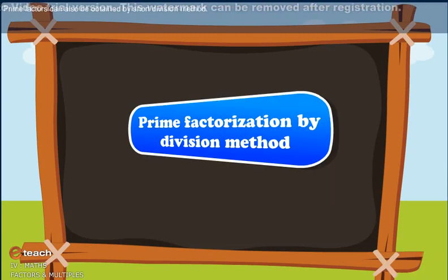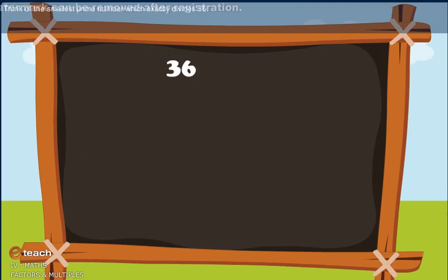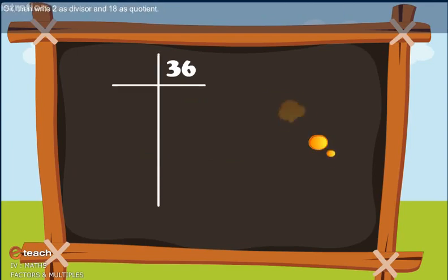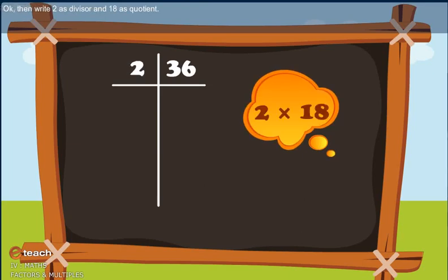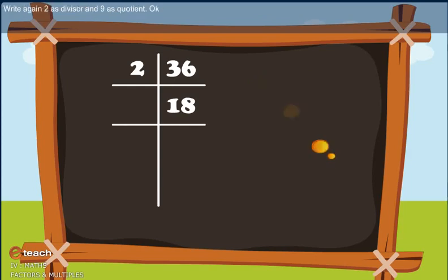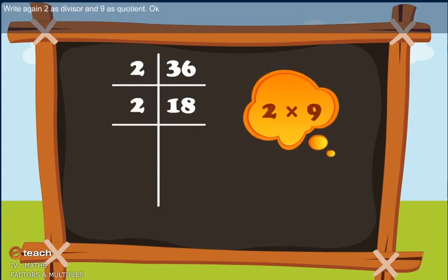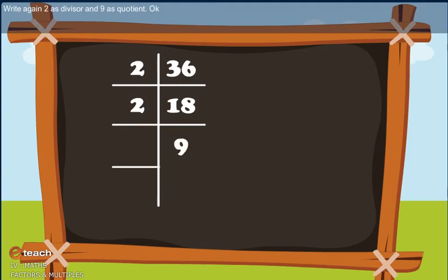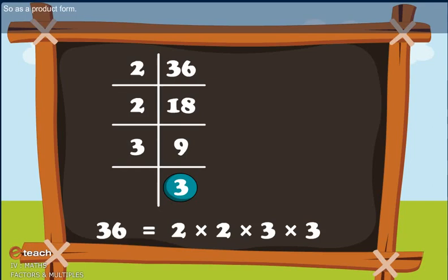Prime factors can also be obtained by the short division method. Think of the smallest prime number which exactly divides 36. Write 2 as the divisor and 18 as the quotient. Now think of the smallest prime number which exactly divides 18. Write again 2 as divisor and 9 as quotient. Then write the result in product form.